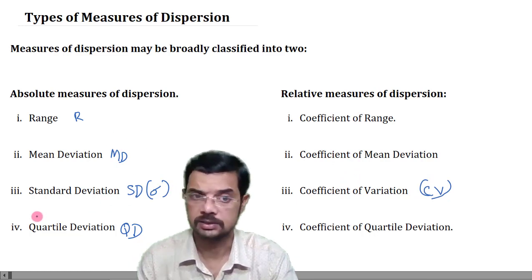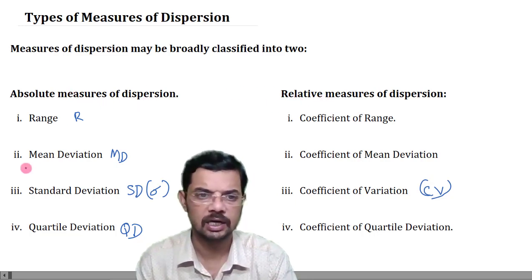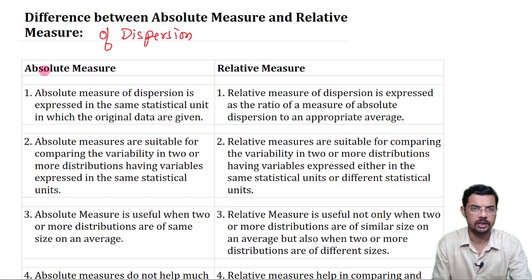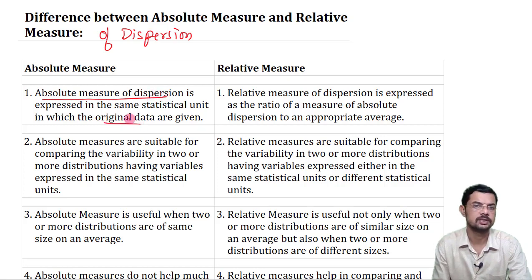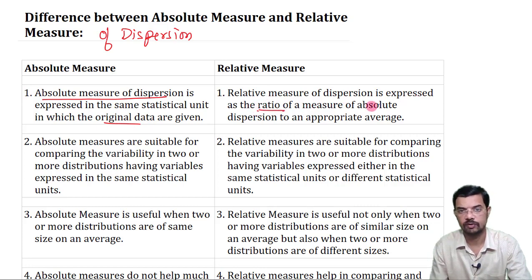Now we shall discuss the differences between absolute and relative measures of dispersion. In the case of absolute measures, the measure and the original data are expressed in the same statistical unit. The relative measure of dispersion, on the other hand, is expressed as a ratio of the absolute measure of dispersion to an appropriate average.